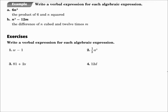Write a verbal expression for each algebraic expression. Question A: six n squared. What we have here is six and n squared, and those are being multiplied together. So for multiply, we say the product of — and what are they taking the product of? Six and n squared. Remember, there are other ways to write these; this is just one way to do it.